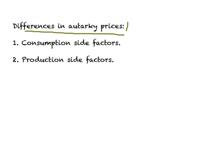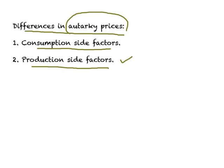We know that differences in autarky prices become the basis for foreign trade. Why would autarky prices be different across countries? This could happen because of factors on the consumption side or because of factors on the production side. Almost all theoretical models of foreign trade have focused on production-side factors as the reason for differences in autarky prices across countries. So for the most part, we believe it is the production side factors.